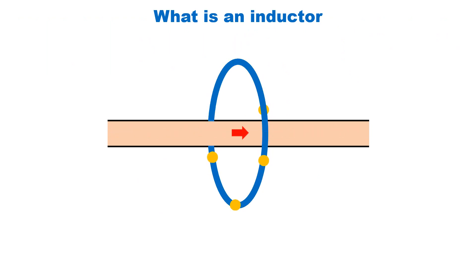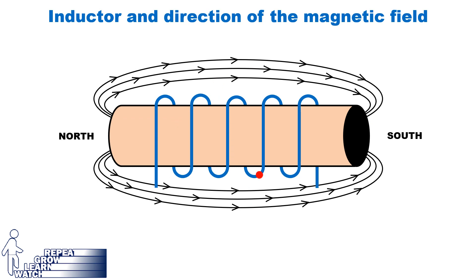One of the basic properties of electromagnetism is that when you have current flowing through a wire, you create a magnetic field around the wire. When a wire is wrapped in the shape of a coil and current flows through it, it creates a magnetic field. The direction of the magnetic field flows from the north pole to the south pole, as shown by the arrows. With current entering from the left and exiting from the right, the north pole is on the left and the south pole is on the right.